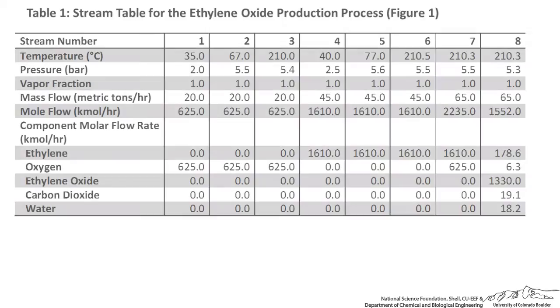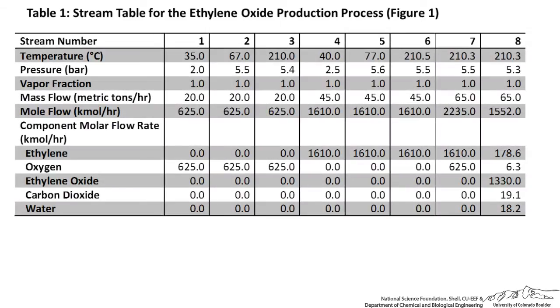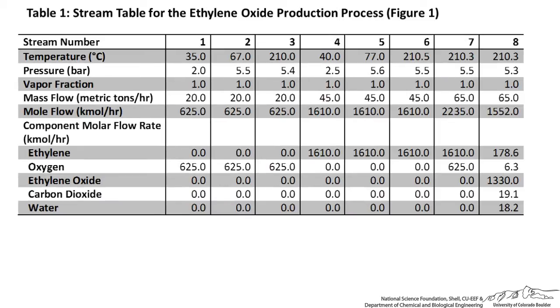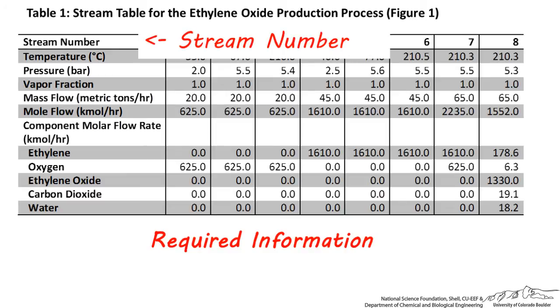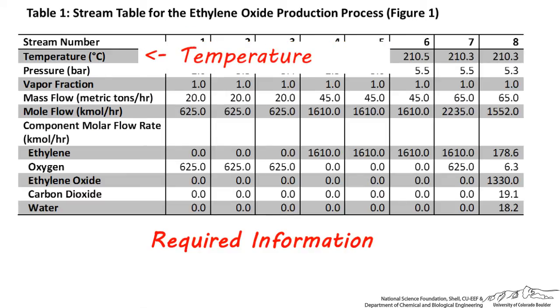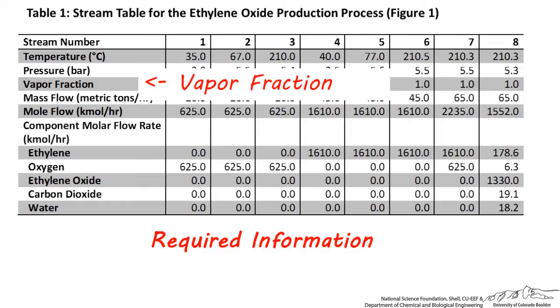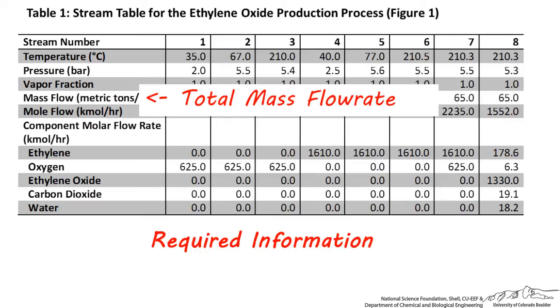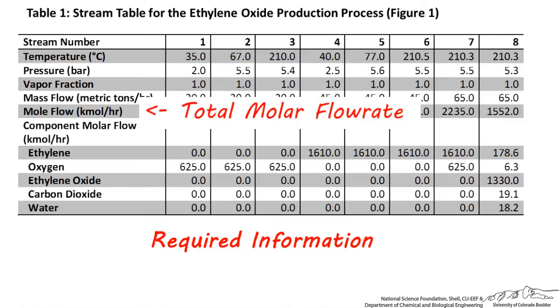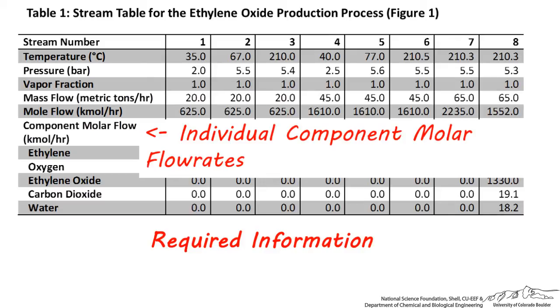Let's next look at the stream table for the ethylene oxide process you just saw. The process has 21 streams and all of them are included in this table, which may take up several pages. Information which is necessary to include about each stream are the stream number, overall temperature of the stream, pressure of the stream, vapor fraction, total mass flow rate of the stream, total molar flow rate of the stream, and individual molar flow rates of the components in the stream.